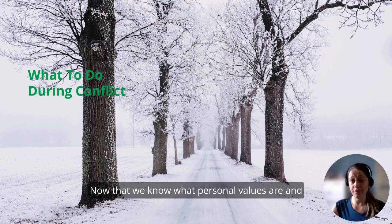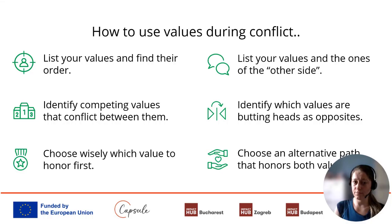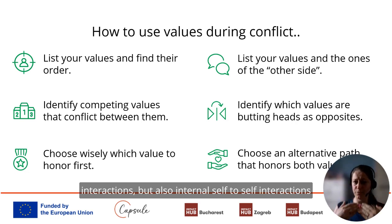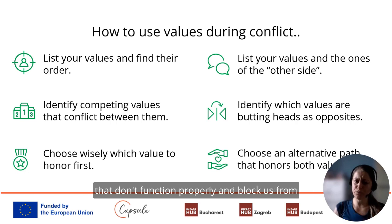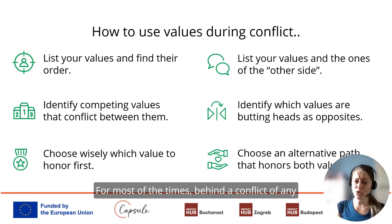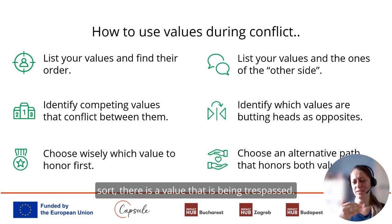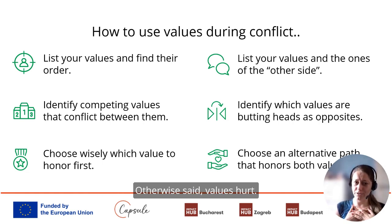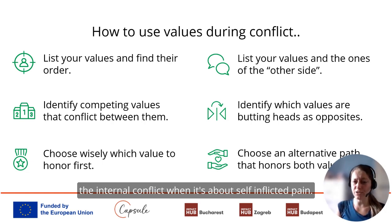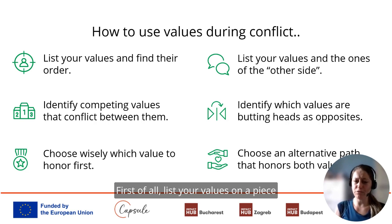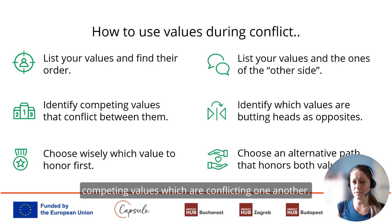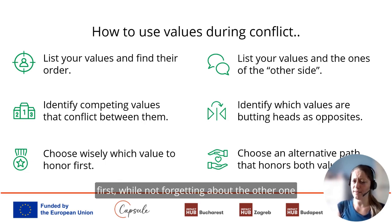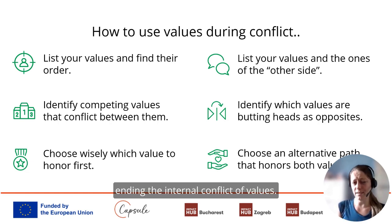Now that we know what personal values are, let's see how we could use them during conflict. Conflicts are not only external self-to-others interactions but also internal self-to-self interactions that block us from taking the actions we wish for. Behind most conflicts there is a value being trespassed — otherwise said, values hurt. For internal conflict, list your values on paper and work out their order. You will see competing values conflicting one another. Choose wisely which to honor first while not forgetting the other, making an assumed decision based on your needs for that moment — ending the internal conflict of values.